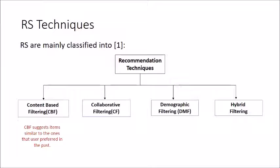The second technique is collaborative filtering, which is the most widely implemented technique in the field of recommendations. Collaborative filtering suggests items based on a user's neighbors — whatever your neighbors or friends are doing is suggested to you. For example, if I add user X to my friend list, then X will also be recommended to my friend Y, because Y and I are friends. This is how Facebook works — on the basis of collaborative filtering.